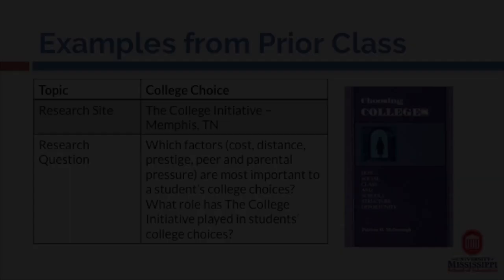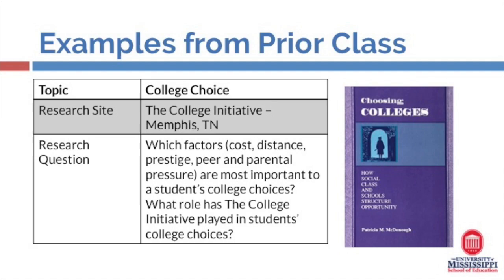Another example from our prior class involved a group of students that selected Choosing Colleges by Patricia McDonough. They located their field research at the College Initiative, which is an after-school enrichment program that works with low-income high school students beginning their freshman year to successfully prepare for college. Based on their research site, the group formulated the following qualitative research questions: which factors — cost, distance, prestige, peer and parental pressure — are the most important to a student's college choices? And what role has the college initiative played in students' college choices? As you can see, your choice text is a jumping-off point for your field research projects.